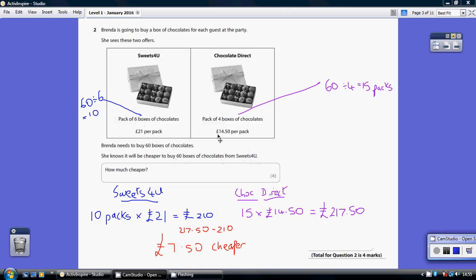Those 15 packs cost £14.50 each, so using your calculator, do 15 times £14.50, and you get £217.50.